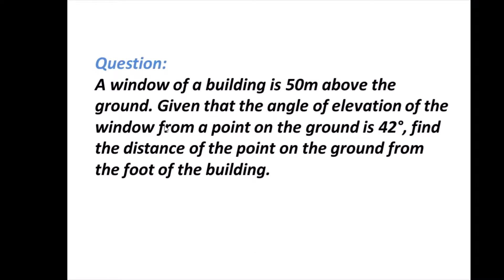Here is a question. A window of a building is 50 metres above the ground. The angle of elevation of the window from a point on the ground is 42 degrees. Find the distance of that point on the ground from the foot of the building.